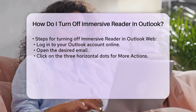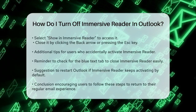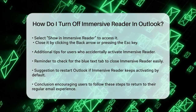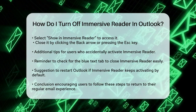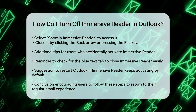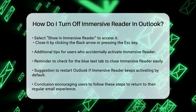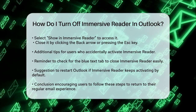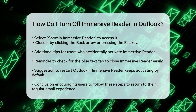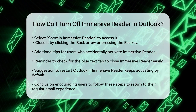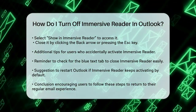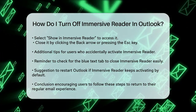Additional tips: if you accidentally turned on Immersive Reader and don't know how to turn it off, look for the Immersive Reader tab with blue text. Clicking on this tab and then selecting Close Immersive Reader will turn it off. Also, if you find that Immersive Reader keeps turning on by default, you can try closing it and then restarting Outlook — it should stay off until you manually turn it back on.